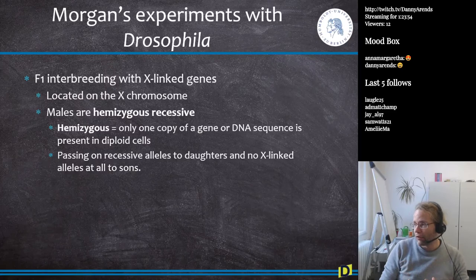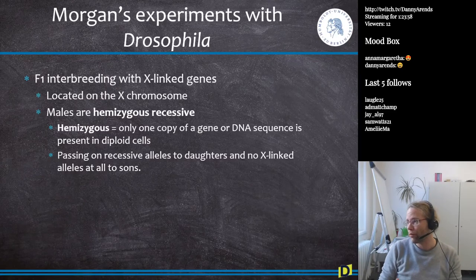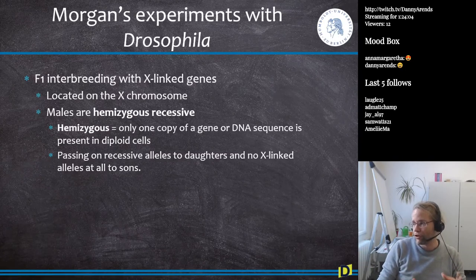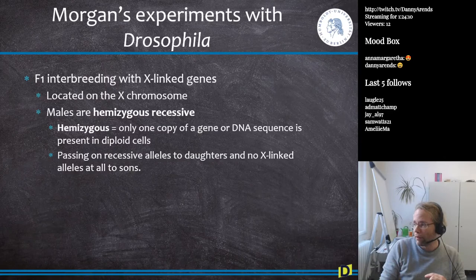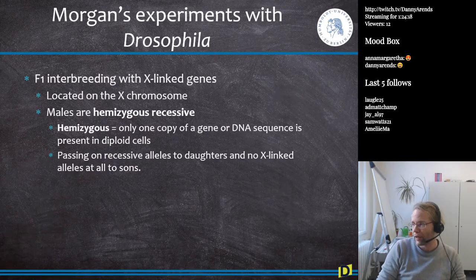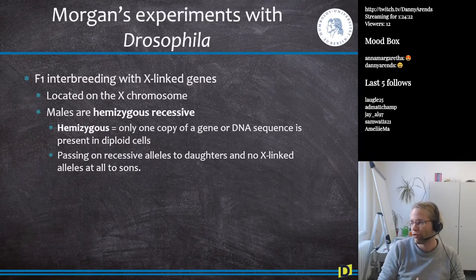Some diseases are located on the X chromosome, meaning that as a male, if you get the broken X chromosome from your mother, you will always pass it along. While if you are female, because you have two X chromosomes, you might be lucky and only one is broken, so you have a 50% chance of passing it on to your offspring, which really makes a difference in the inheritance pattern.